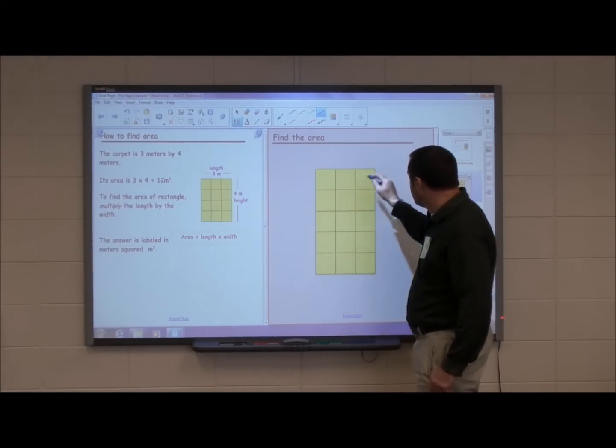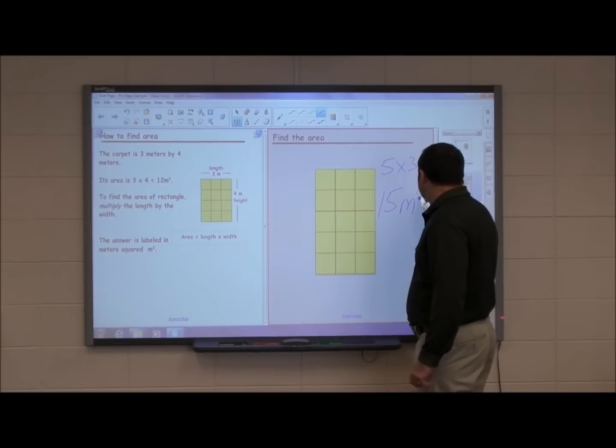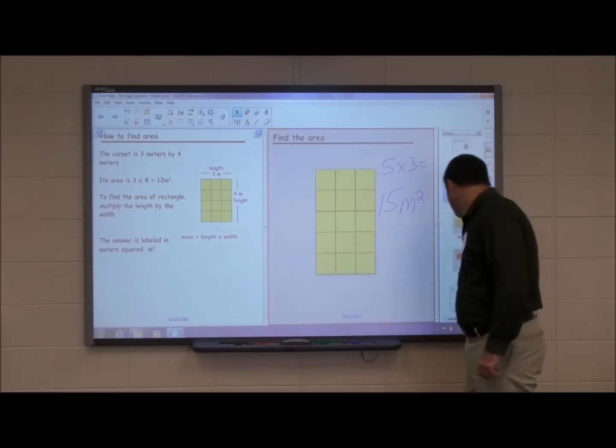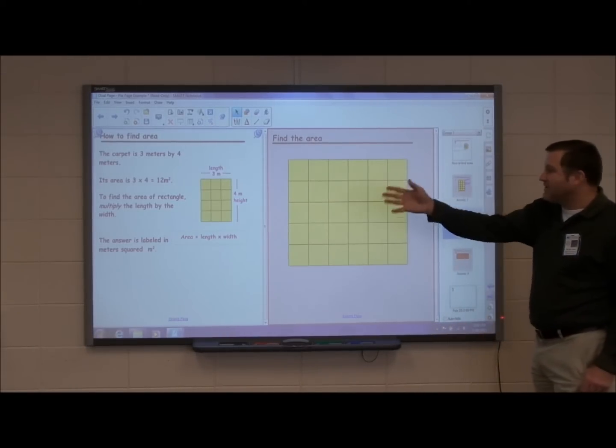This is 1, 2, 3, 4, 5 by 3. So I've got 5 times 3. And that equals 15 square meters. I'm going to place my pin down. Move to the next problem. Notice how the notes stay.